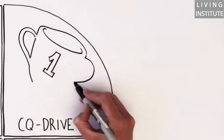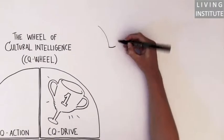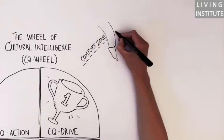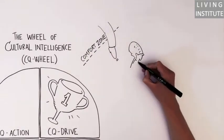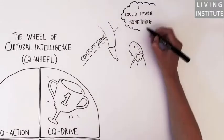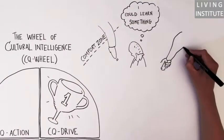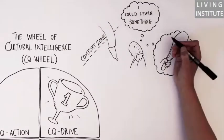First part of the wheel is CQ drive. This is your motivation and confidence to work outside your own cultural comfort zone. Do you think you can learn anything from being in another culture than your own, or do you let your stone age brain tell you that it's much more valuable to be around people like yourself?